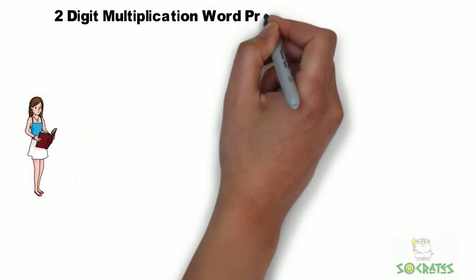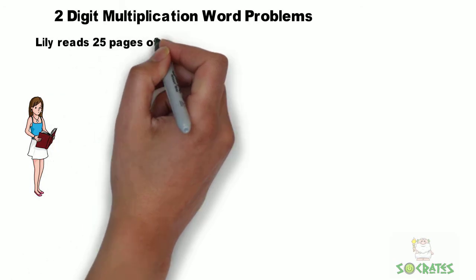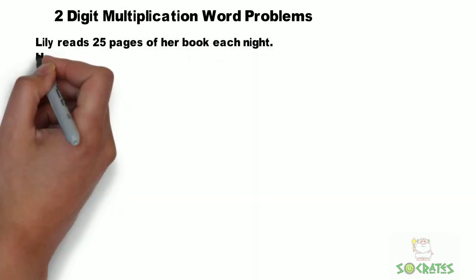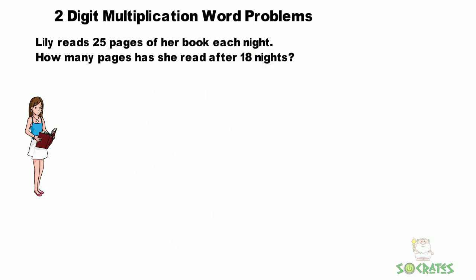Two-digit multiplication word problems. Lily reads 25 pages of her book each night. How many pages has she read after 18 nights?